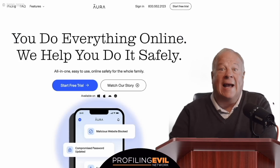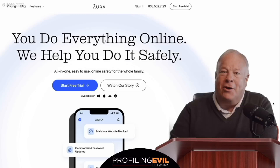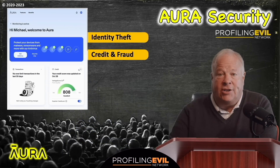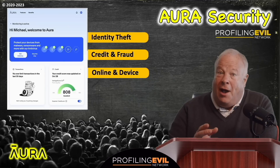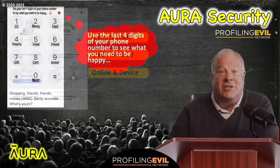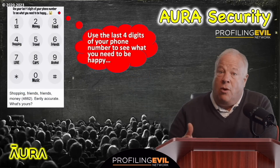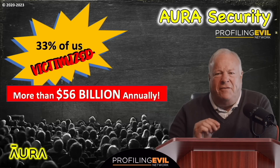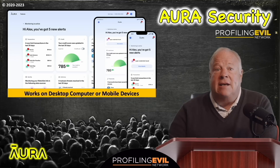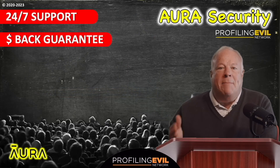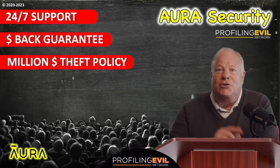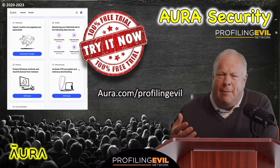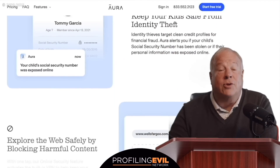I'm pausing to share some concerns I have surrounding identity theft and fraud. I've learned a lot from our partner, ARA. They're the pros at protecting people from cyber predators. ARA provides identity theft protection, credit and fraud protection, and online and device security for you and your family. They taught me to think twice before answering those online questionnaires designed to steal our personal information. U.S. statistics show that 33% of us have been victimized by identity theft at an annual cost of more than $56 billion each year. ARA protection plans come with around-the-clock support, a money-back guarantee, and a million-dollar theft policy. You can try ARA for free by clicking on the special Profiling Evil link in the description below. You insure your car and you insure your house — don't you think it's time to insure your identity?